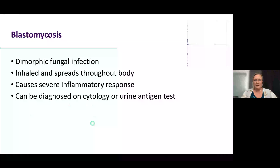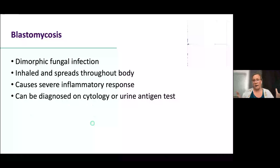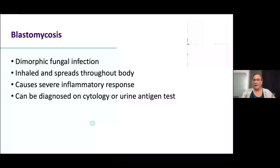Blastomycosis is a dimorphic fungal infection, meaning it lives in different forms in the environment versus in the animal. The animal inhales the environmental form, it transforms to the yeast form at body temperature, and then can travel throughout the body — setting up in the lungs but then spreading to bone, skin, lymph nodes, and elsewhere. It causes a severe inflammatory response. It can be diagnosed on cytology, but sometimes we won't find the fungal organisms, so there is a urine antigen test that is really helpful for diagnosis as well.